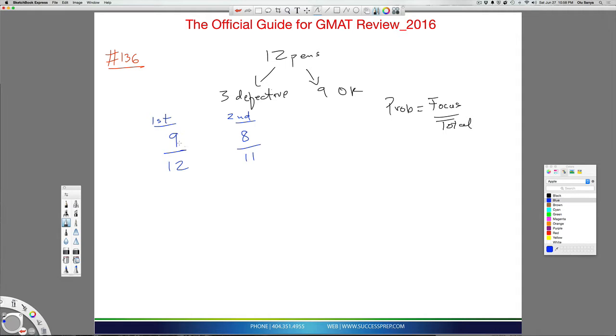So this is the probability that the first will be non-defective and the second will be non-defective. And at this point, you multiply that essentially.